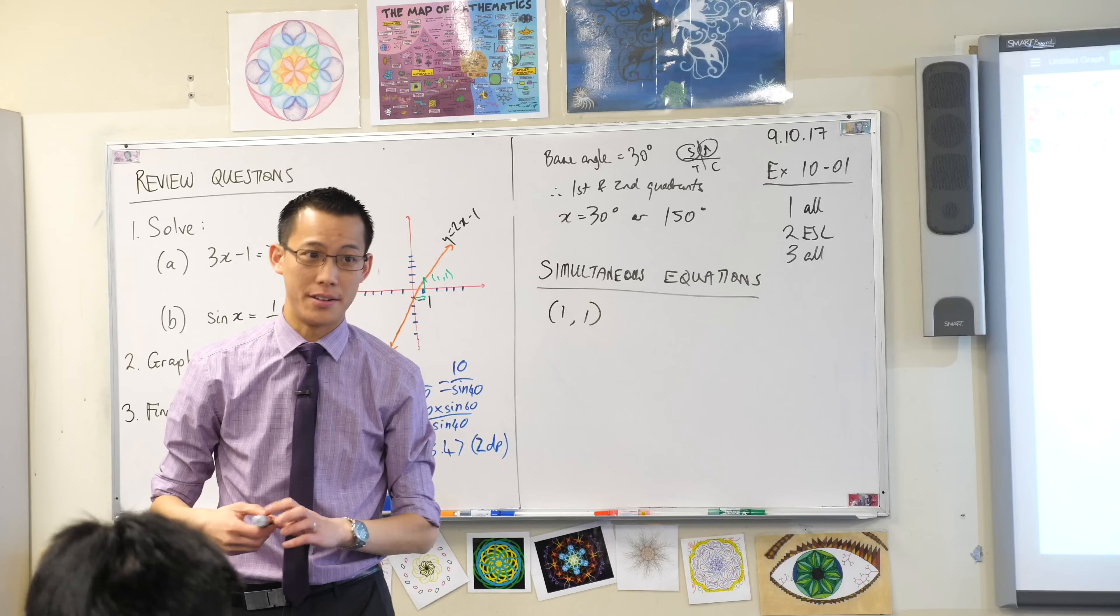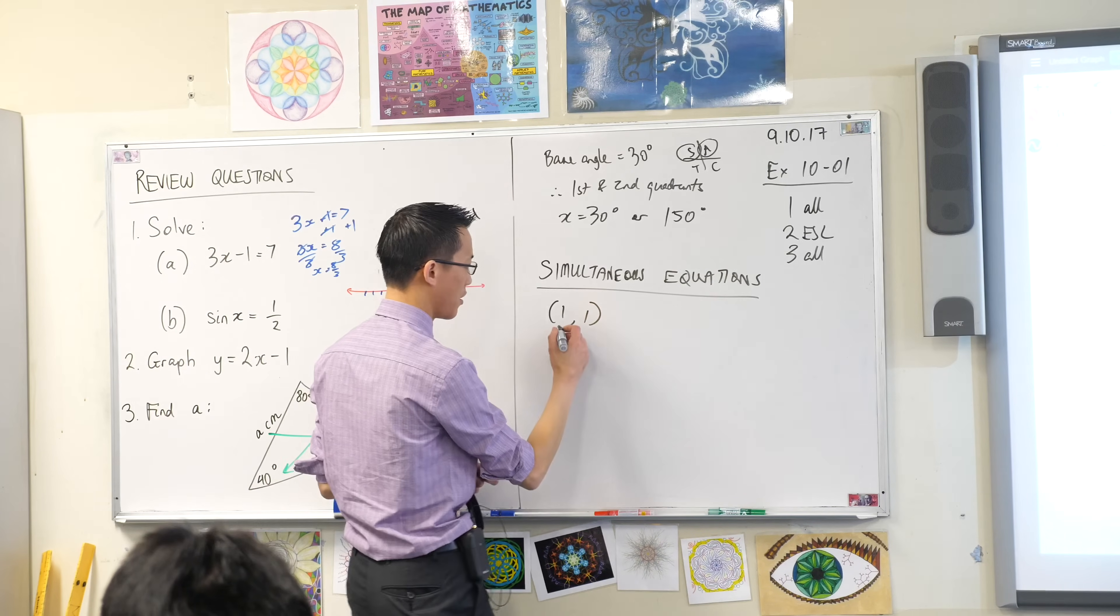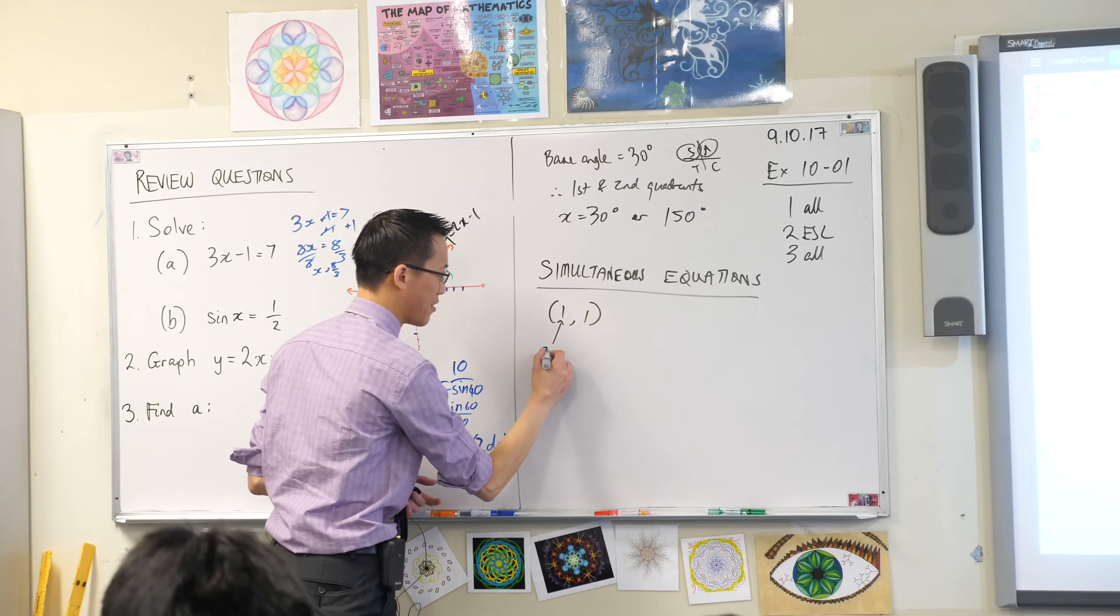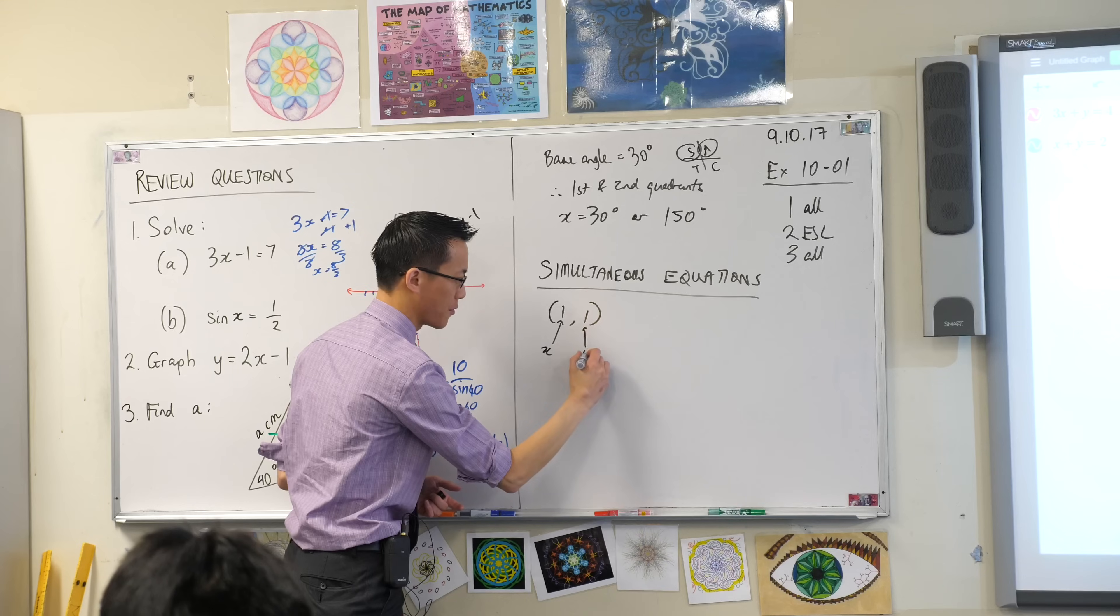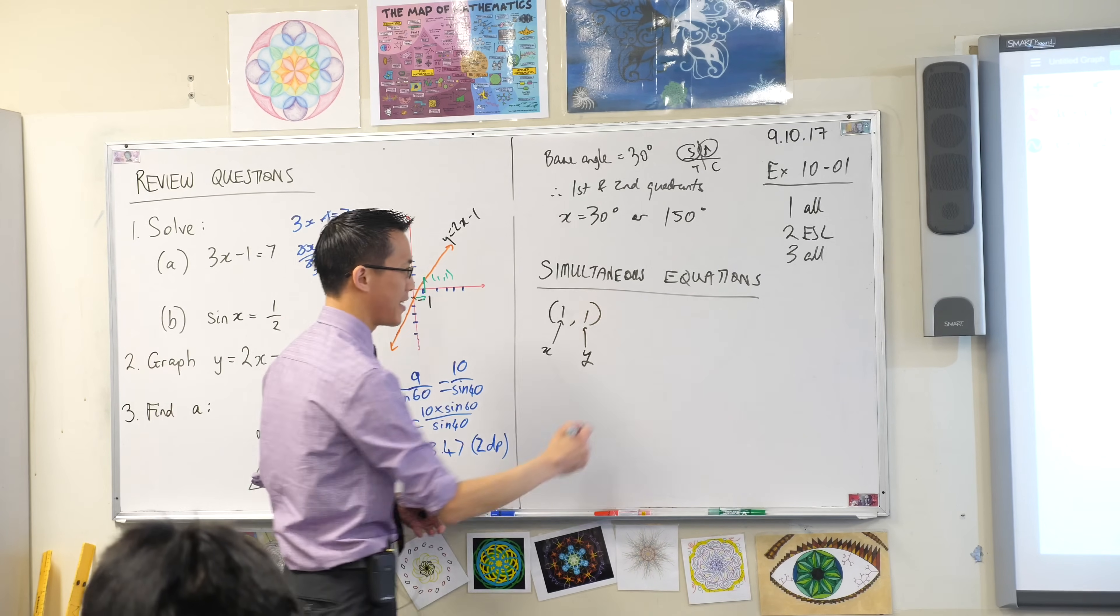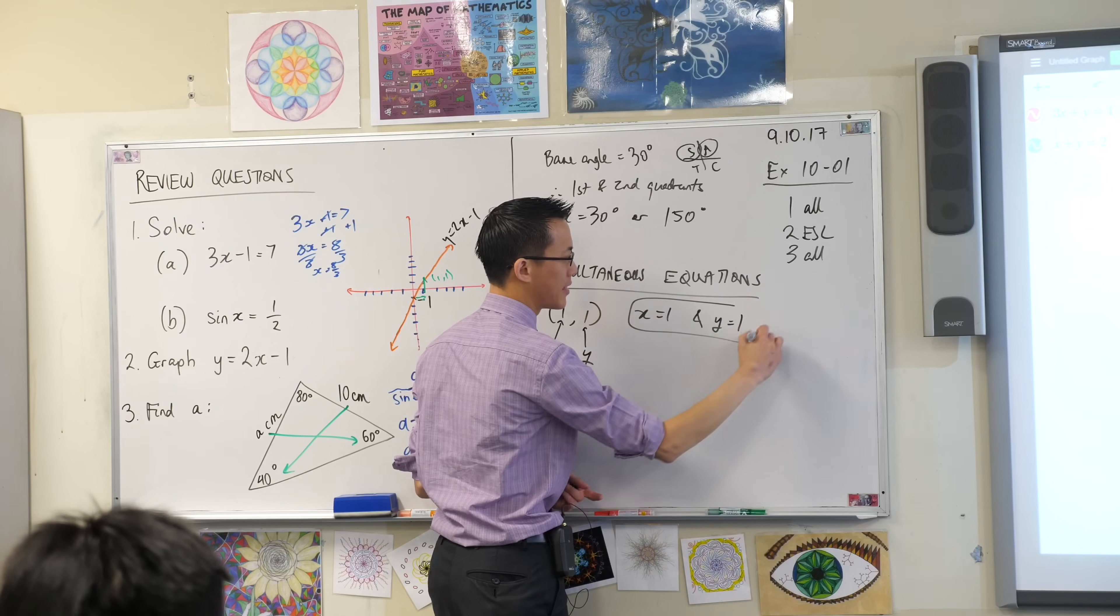It's coordinate shorthand for, what's the first number for? It's an x. And the second number is a y. So when we just say 1, 1, what we really mean is x equals 1 and y equals 1 at the same time.